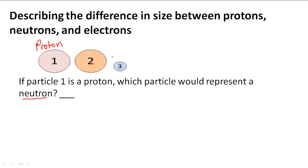We have to take a look at 2 and 3 and figure out which one of them would represent a neutron. We have to remember that a neutron is about the same mass or a little bit greater mass than a proton and that it has no charge.